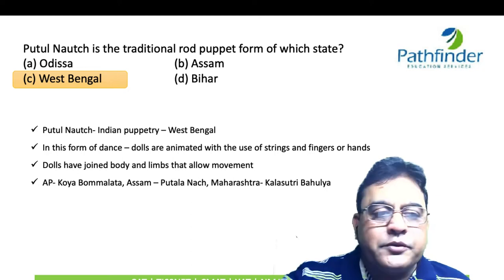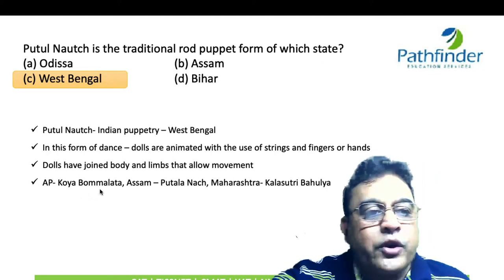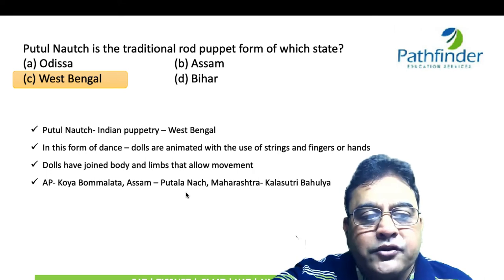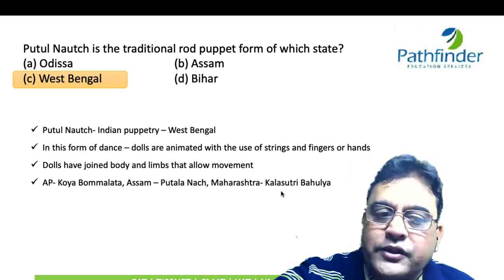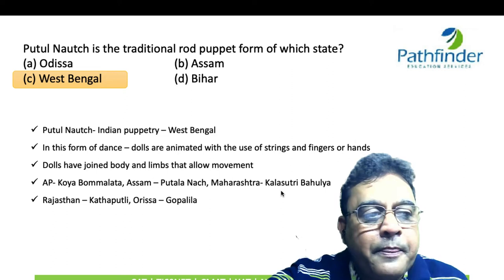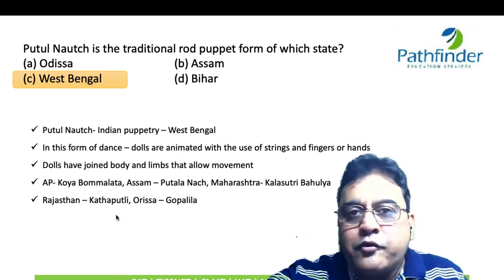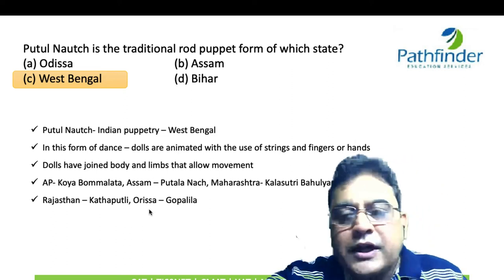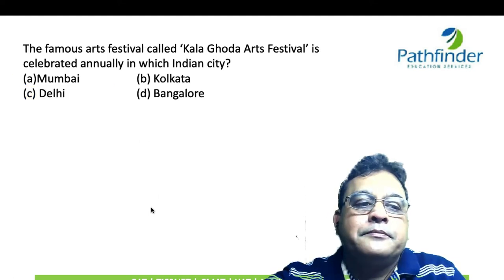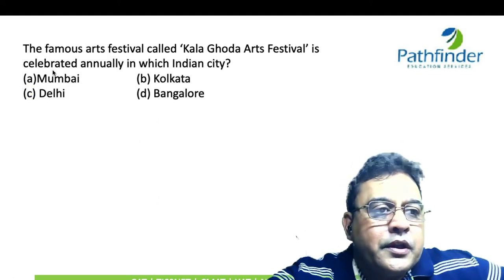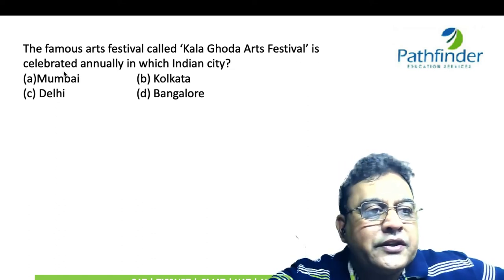Other puppetry dance forms in India: In Andhra Pradesh it is Koya Bomalata; in Assam it is also known as Putul Nach; in Maharashtra they are known as Kalasutri Bahulya; in Rajasthan they are popular as Katputli; and in Odisha they are popular as Gopalila.